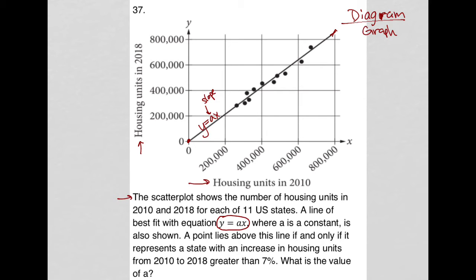Where a is a constant is also shown. A point lies above this line if and only if it represents a state with an increase in housing units from 2010 to 2018 greater than 7%. So these points here lie above the line because they had an increase in housing units greater than 7%. What is the value of a?